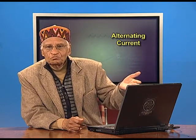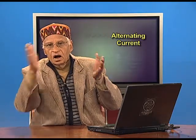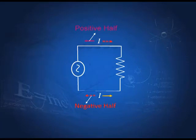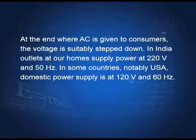Why do we use AC? AC is something that can be stepped up in voltage or stepped down in voltage. So at the power stations, if we generate AC, it can be stepped up and transmitted. We step up the voltage of the supply at the plant and then at the place of the consumer, we step it down to a suitable level so that there is no danger. That is the advantage of AC. DC cannot be dealt with in this fashion. Where AC is given to consumers, the voltage is suitably stepped down.